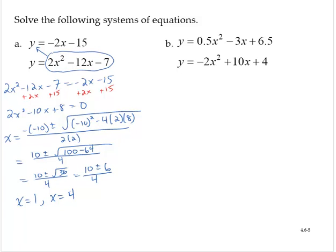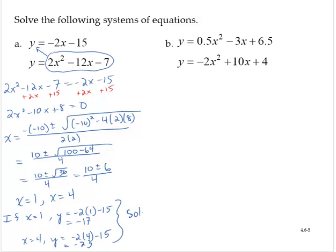But wait — these are systems of equations, so solutions are written as ordered pairs. We have the x values, but we need the y values. If x equals 1, then y equals negative 2 times 1 minus 15 using the first equation, so y equals negative 17. If x equals 4, then y equals negative 2 times 4 minus 15, which is negative 8 minus 15, which is negative 23. So the solutions of this system are (1, negative 17) and (4, negative 23).